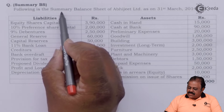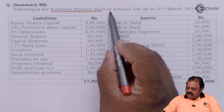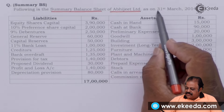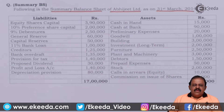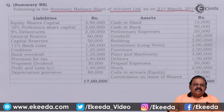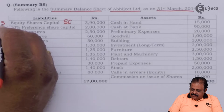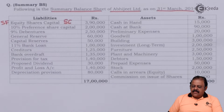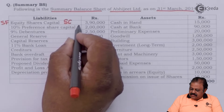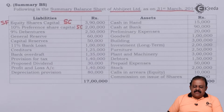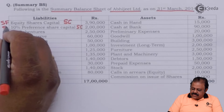Following is the summary balance sheet of Abhijit Limited as on 31st March 2014. We are required to mark the items based on the format which we have studied. Equity share capital will be part of share capital of the company — it will be part of owner's fund or shareholder's fund. 10% preference share capital is also part of share capital and part of shareholder's fund.